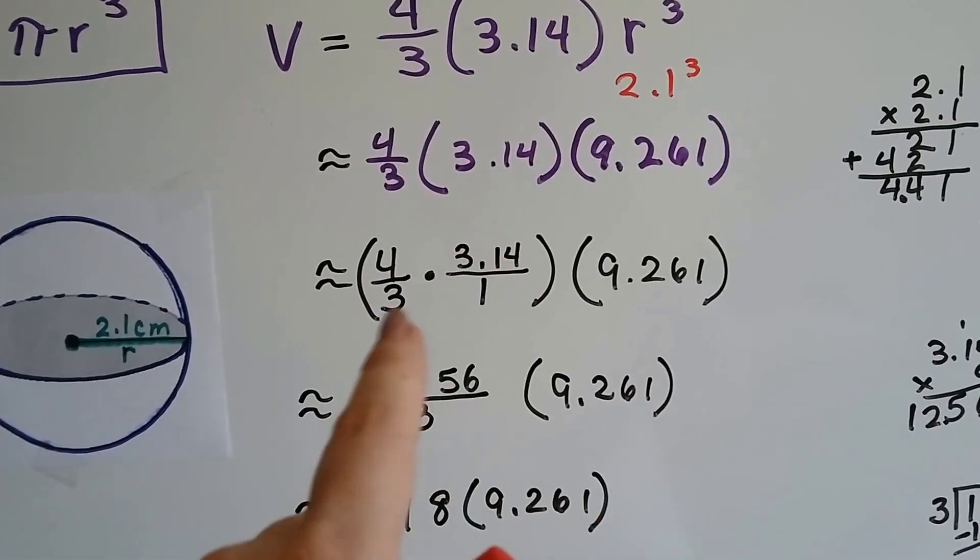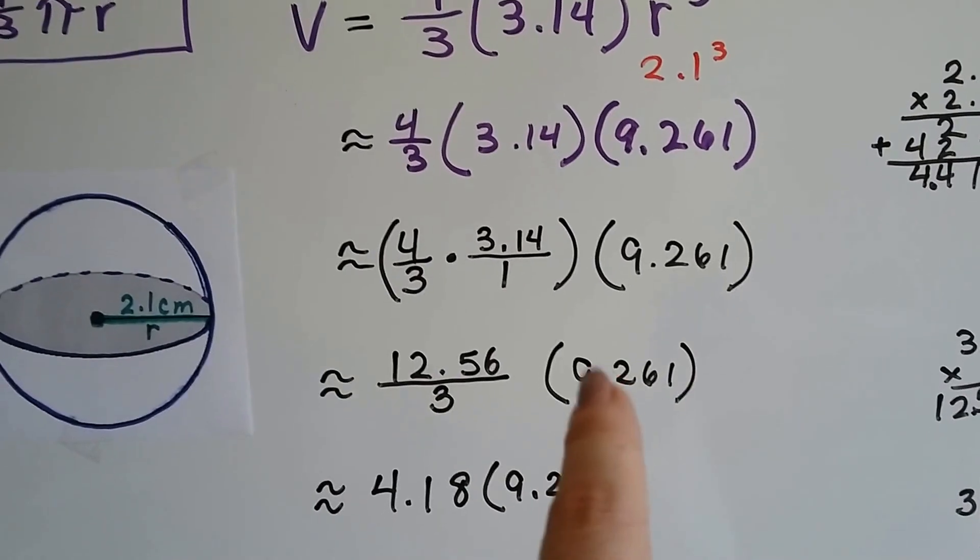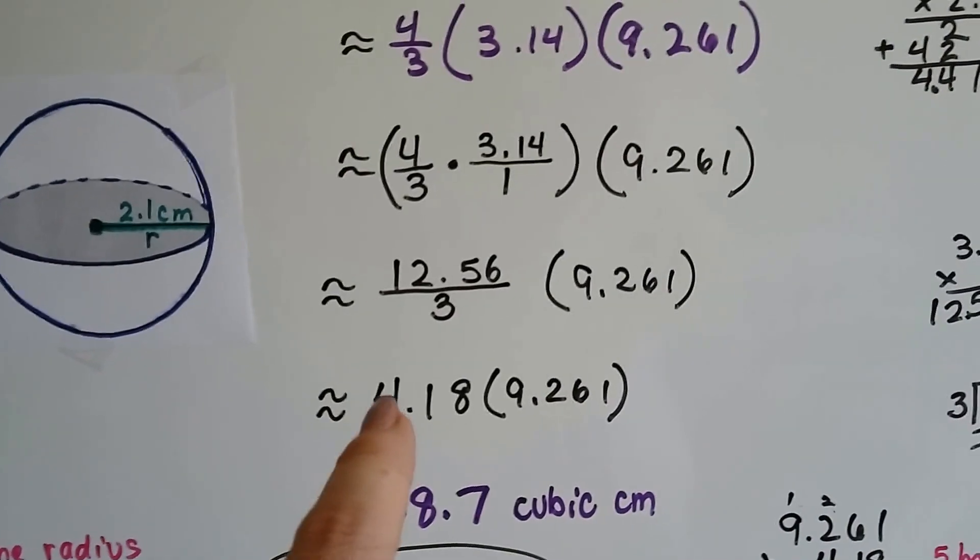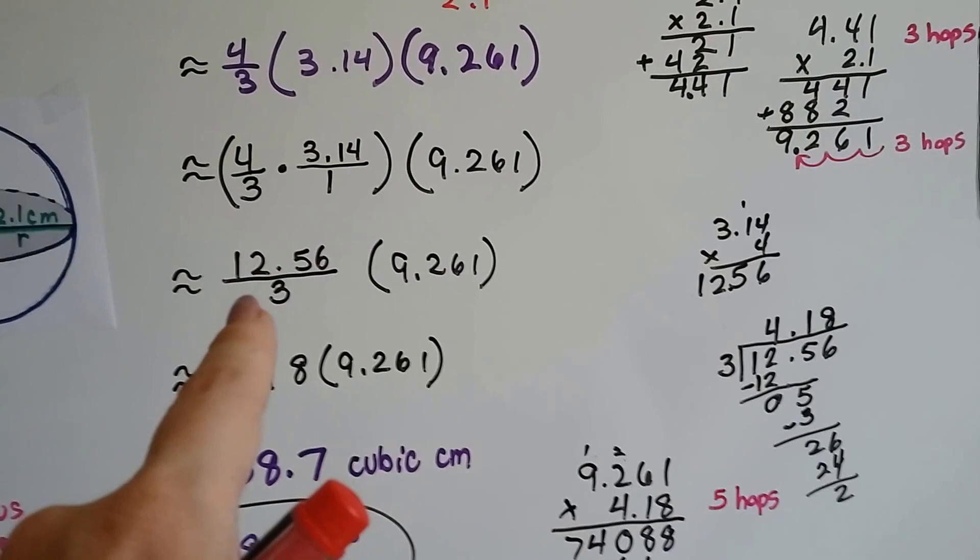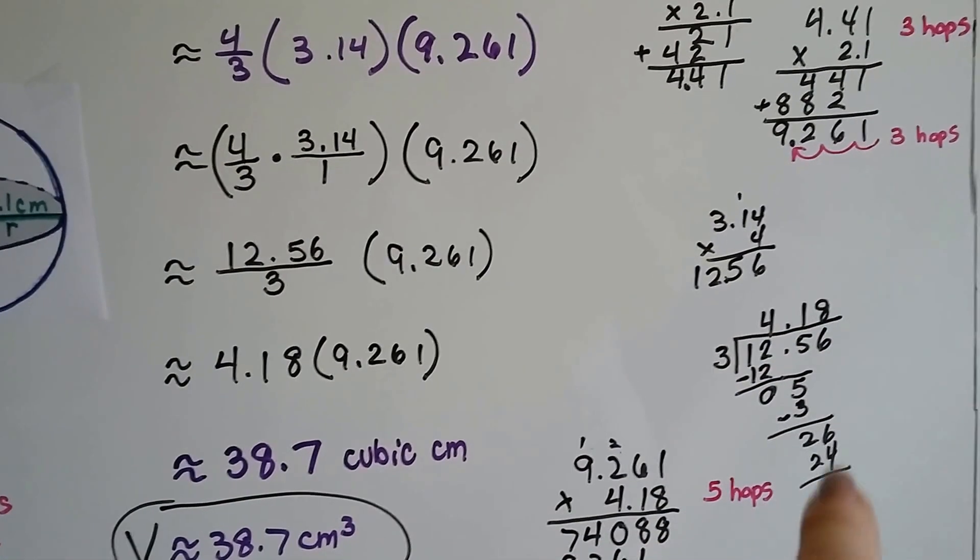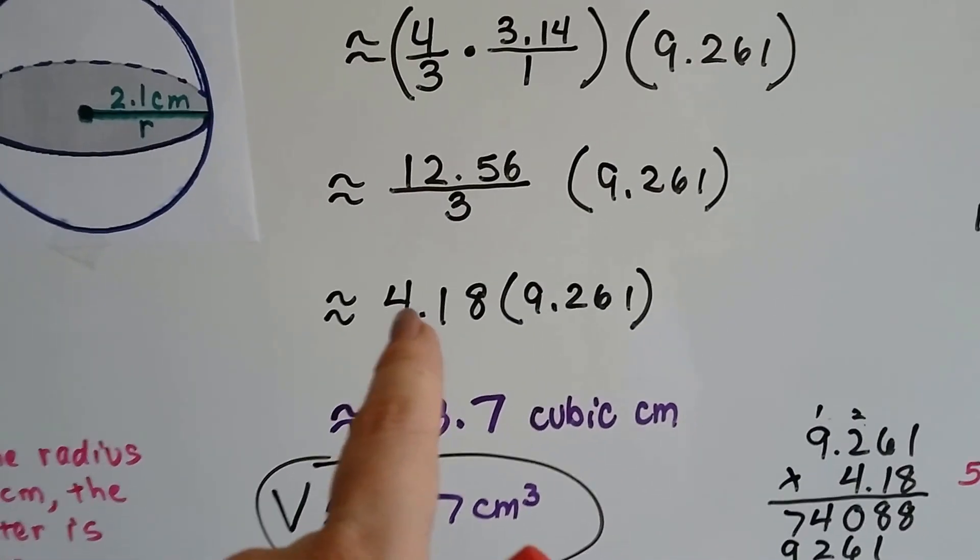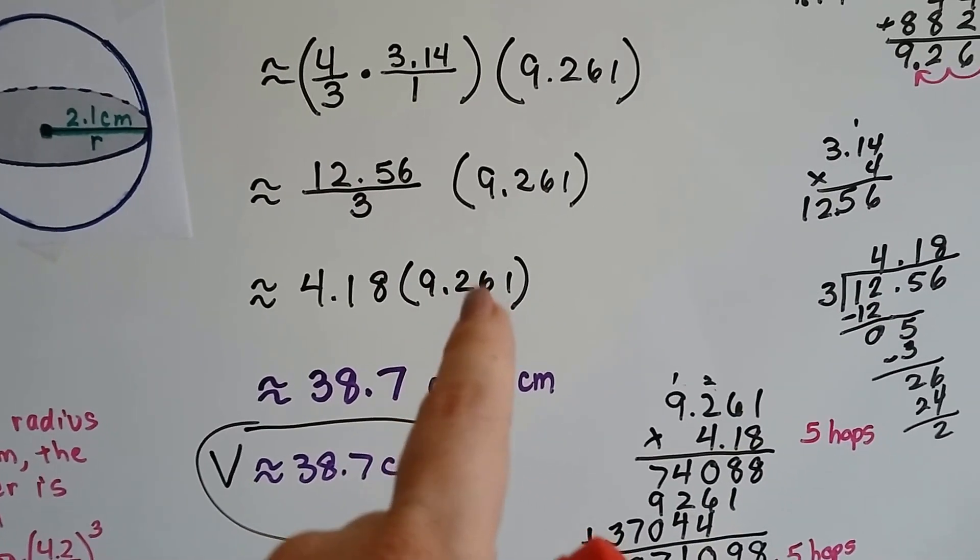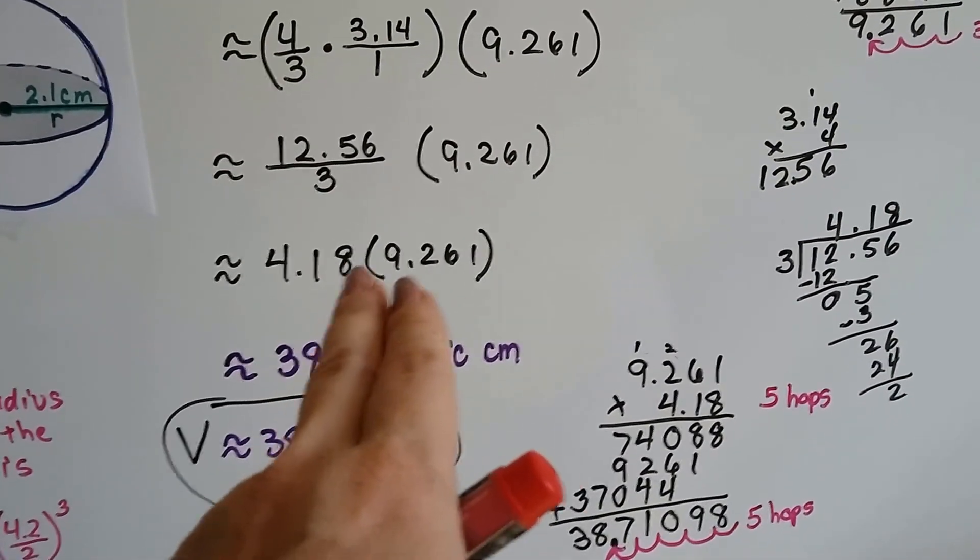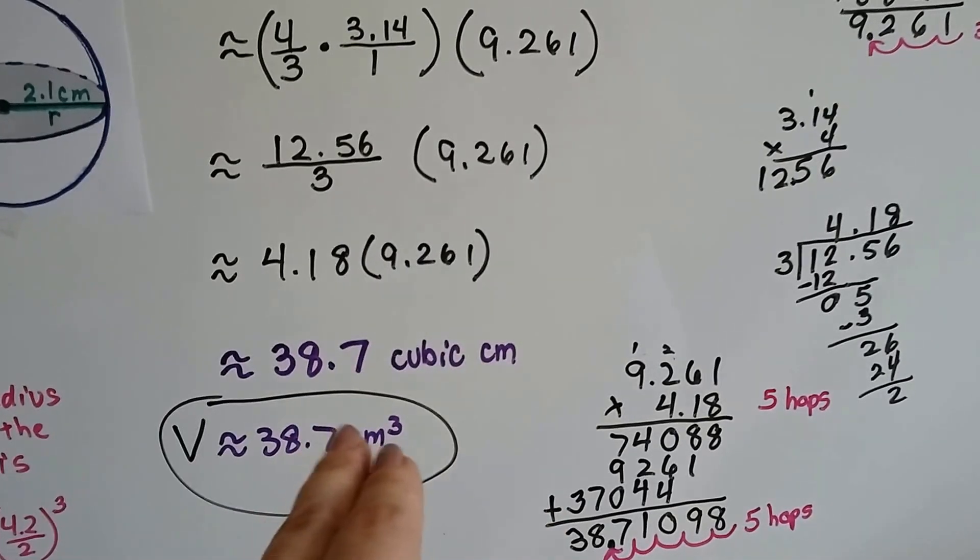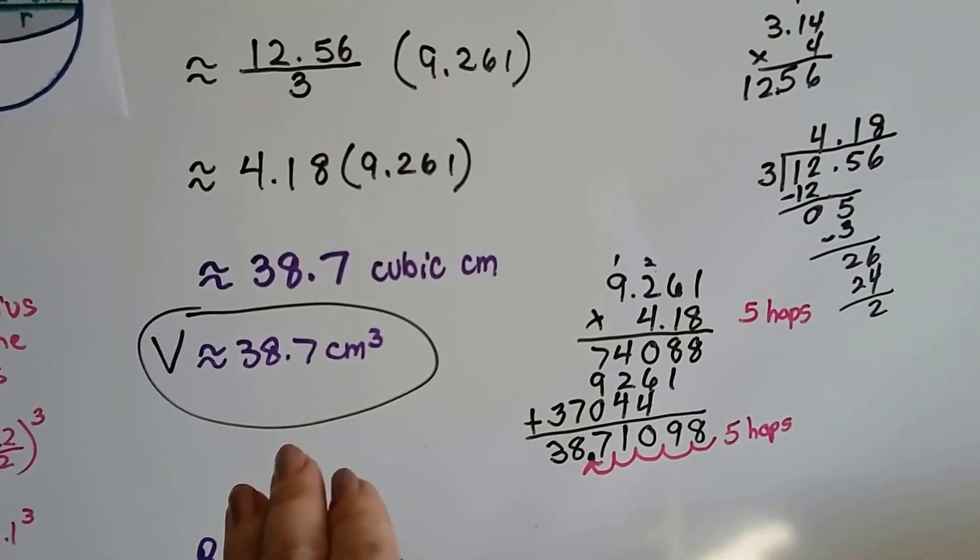Well, four-thirds times pi comes out to 12.56 over 3. We need to multiply that to our 2.1 cubed product, and we get 4.18 for this. 12.56 divided by 3—remember, fractions are little division problems. It came out as 4.18, and it kept going on, but we only need to go to the nearest tenth. So I'm going to multiply this 4.18 times the 9.261, and the reason I'm not doing it to the tenths right now is I want it to be accurate. If I start rounding now, my answer won't be as accurate. If I do this multiplication, get my answer, and then round it, it's going to be more accurate.